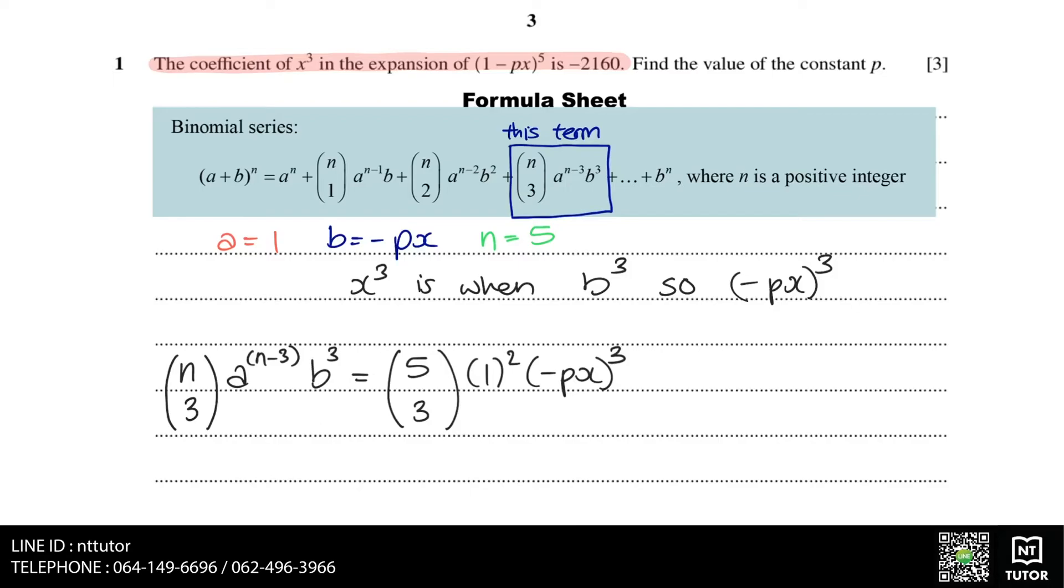Since the coefficient is equal to minus 2160, we can set the other side of the equation to minus 2160 x cubed. Then all we need to do after this is solve for p.